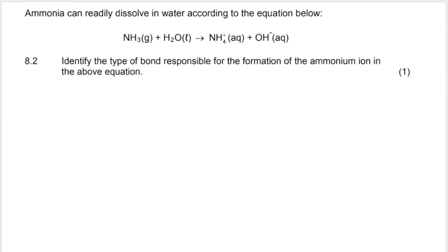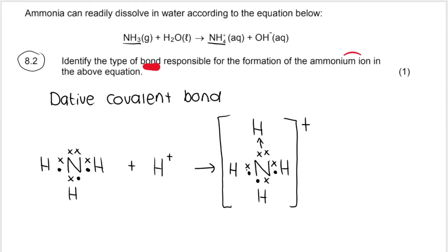Our next question says, identify the type of bond responsible for the formation of the ammonium ion in the above equation. Remember, this is ammonia and this is the ammonium ion. This is more for the grade 11s. They don't really ask this in grade 12, but remember it is a dative covalent bond. And they don't in this question ask for this, but they could ask you to draw Lewis dot diagrams to show the formation of the dative covalent bond.